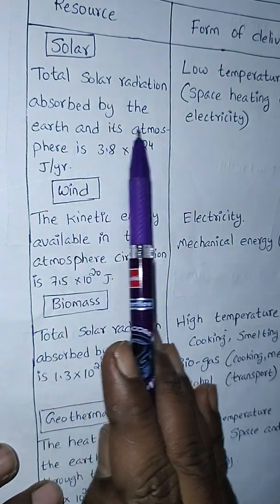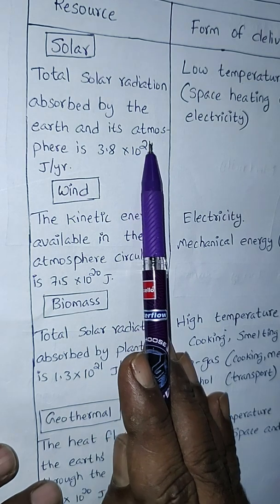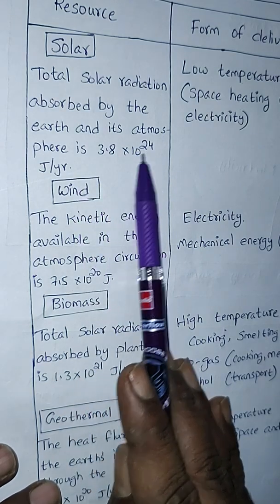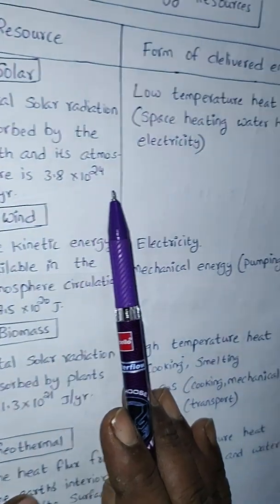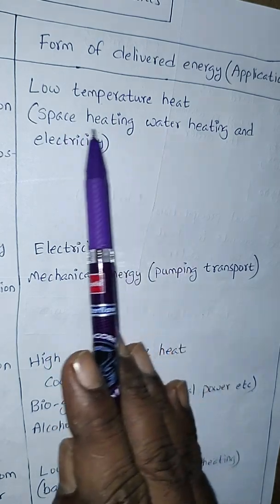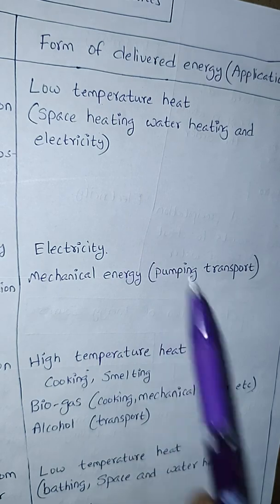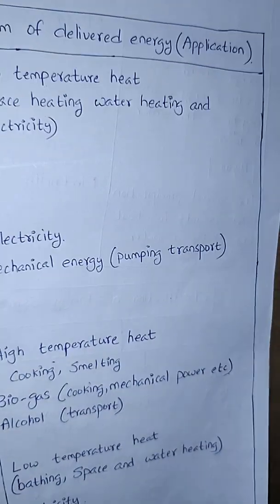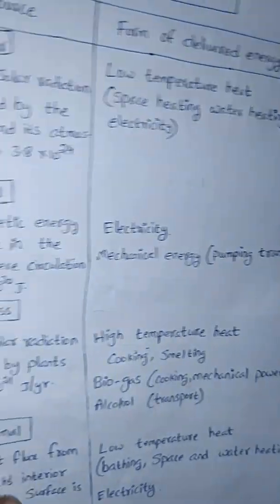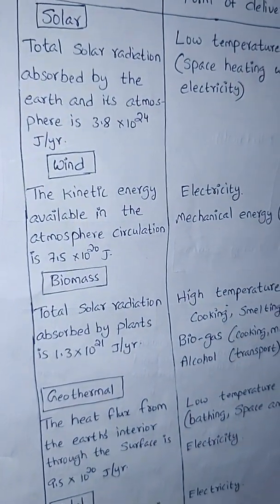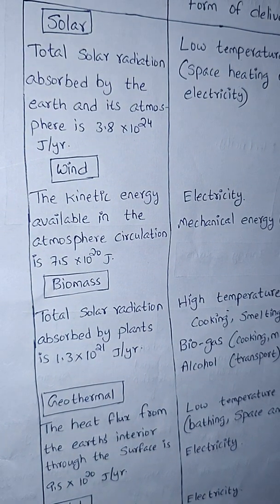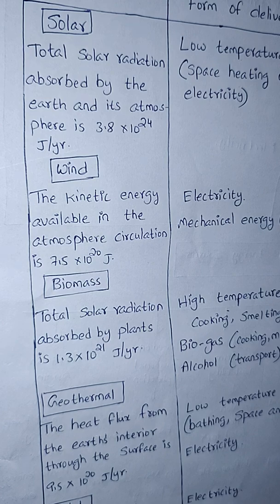For solar: the total solar radiation absorbed by the earth and its atmosphere is 3.8 × 10²⁴ J/yr. The applications include low temperature heat, space heating, water heating, and electricity. We can see solar in domestic and household applications. Nowadays, in each and every sector they are adopting solar energy to save money, time, and energy.